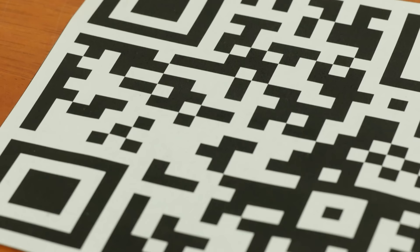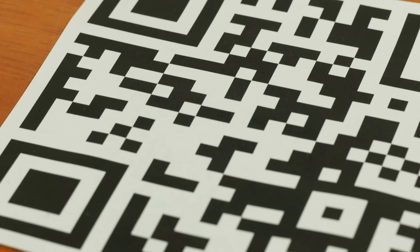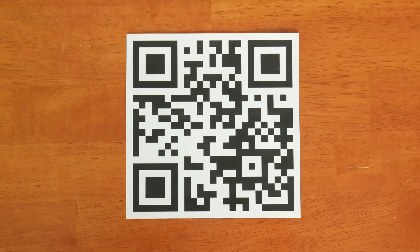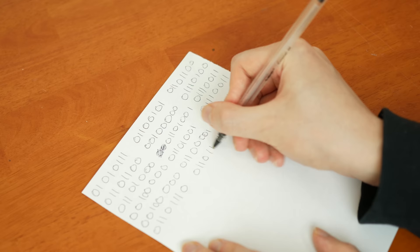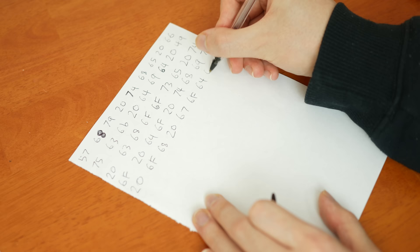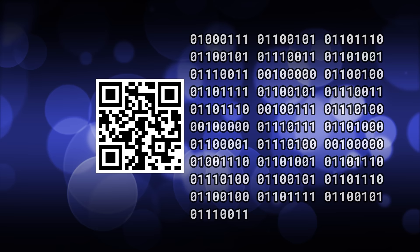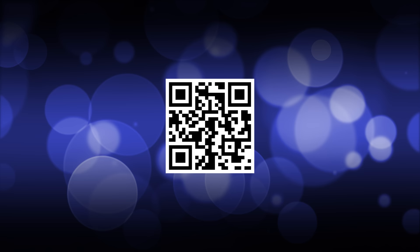A QR code is technically just a storage medium like any other. It's just as legitimate as a floppy disk, CD, or even hard drive. It doesn't store much data, but it is data nonetheless. And while a QR code is most commonly used to store ASCII text, it can actually be made to store binary data as well, which pretty much means anything you can store on a computer, you can store on a QR code, provided that it fits inside the size limitations.